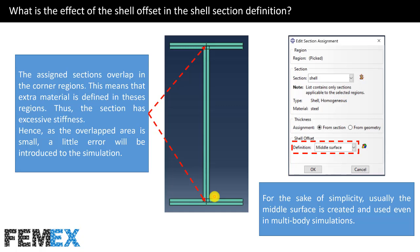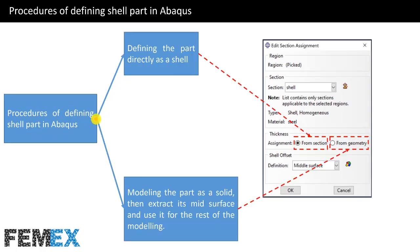Now I want to talk about general procedures of defining shell parts in Abaqus. There are two general procedures. The first one is defining the part directly as a shell — we used this procedure in one of the previous tutorials. The second procedure is modeling the part as a solid, then extracting its mid-surface and using it for the rest of the modeling. In this procedure, we use the mid-surface extraction tool, which is very useful for industrial projects. If we use the first procedure, in the section assignment we must select from section. If we use the second procedure, we must choose from geometry.